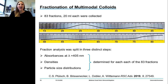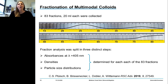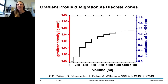Back to our colloidal clusters. After zonal rotor centrifugation, we use the fraction collector to collect all the zones. In a typical experiment, we collect more than 80 fractions of 20 milliliters each, then do a careful analysis of all fractions. We measure the absorption profile, the density of all fractions to probe the density gradient profile, and the particle size distribution of every fraction to precisely know the composition.